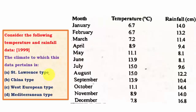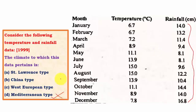The next question has four options: Saint Lawrence type, China type, Western European type, and Mediterranean type. The most clearly distinguishable is Mediterranean type where summers are totally dry and winters are mildly wet. The graph shows very well distributed rainfall throughout the year, so Mediterranean can be ruled out. Western European type has moderate temperatures with no extremes, and rainfall is well distributed with winter maxima due to westerlies.